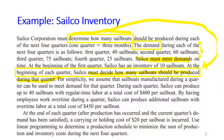Sometimes the problem itself tells you what the decision variable is — you just need to be ready to notice that clue. The problem specifically says Silco must decide how many sailboats should be produced during that quarter. It also states up to 40 sailboats, which — as mentioned before — is a constraint using 'at most' language. It also says Silco can produce additional sailboats using overtime, which is again a clue for a decision variable, since it is Silco's choice.